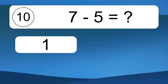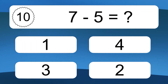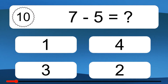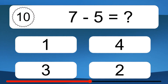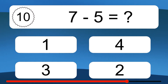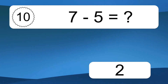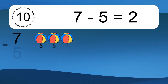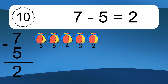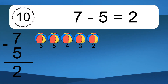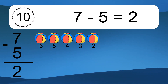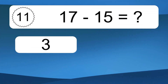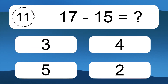7 minus 5 equals what? 7 minus 5 equals 2. Let's count it: 6, 5, 4, 3, 2.